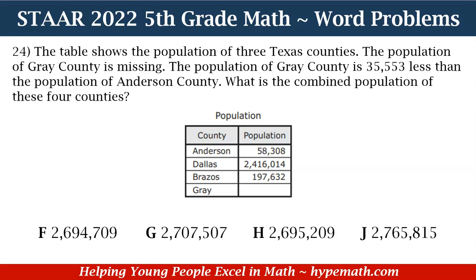Our answer choices are: F — 2,694,709; G — 2,707,507; H — 2,695,209; and J — 2,765,815.